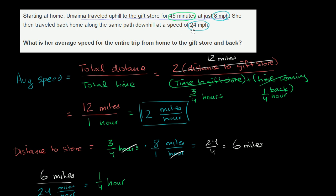You might have been tempted to just average 24 and 8, but that wouldn't be right because she traveled those speeds for different amounts of time. What you really have to do is go back to basics: total distance over total time. The first sentence gives us half the total distance; double it to get the full distance. They tell us the time to the store, and we use the distance and return speed to find the time back. Then total distance divided by total time gives us 12 miles per hour.